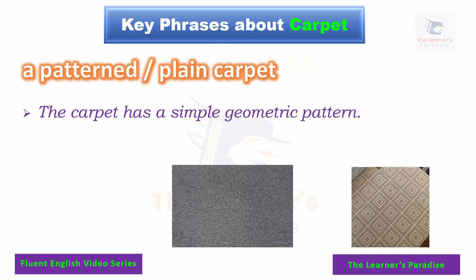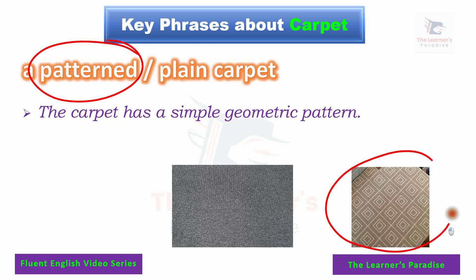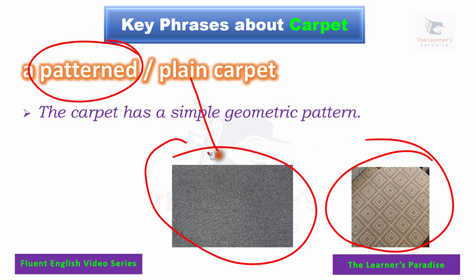Next, we have a patterned or plain carpet. A patterned carpet has some patterns on it — like this, this is a patterned carpet. On the opposite side, we have a plain carpet, which doesn't have any patterns on it. Example sentence: the carpet has a simple geometric pattern.